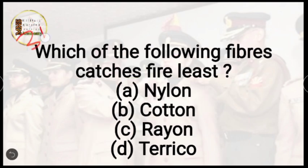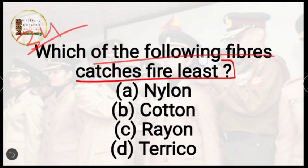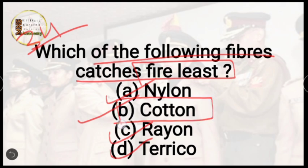Question number 34: which of the following fibers catches fire easily? Options are nylon, cotton, rayon, or terry cotton. The correct answer is option B, cotton. You may have noticed at home that when we light a diya, we use a cotton wick — that is how you know cotton catches fire most easily.